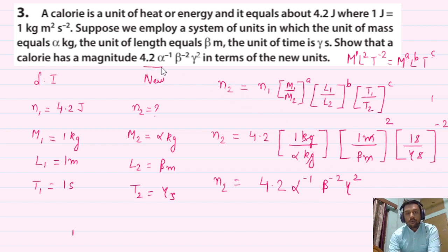You had to show 4.2 α⁻¹ β⁻² γ². We have proved this question. I hope it is clear to you, and if you liked the video please like, share and subscribe, and keep watching, keep supporting you.